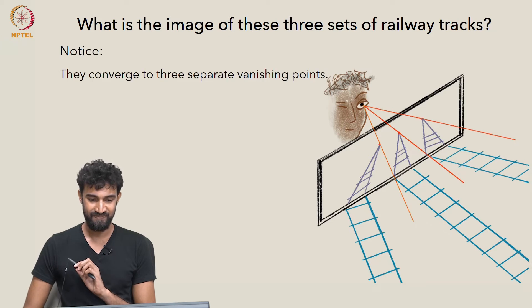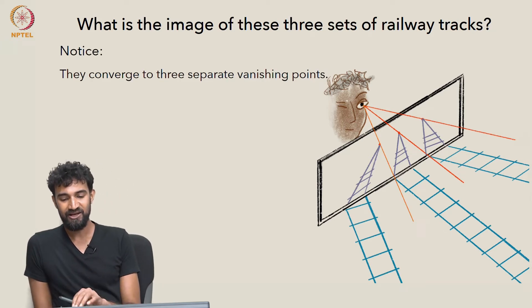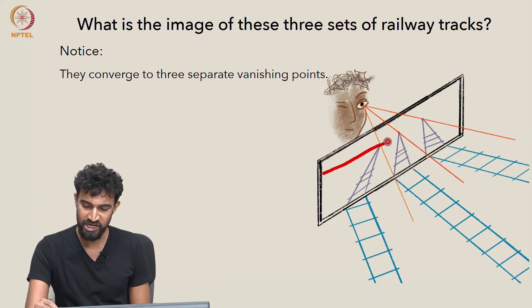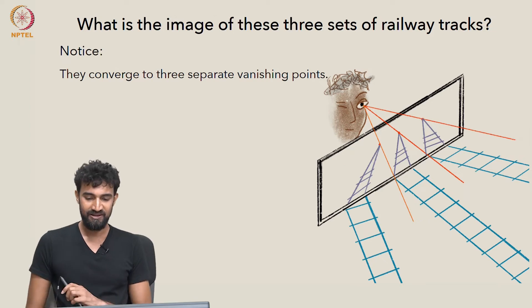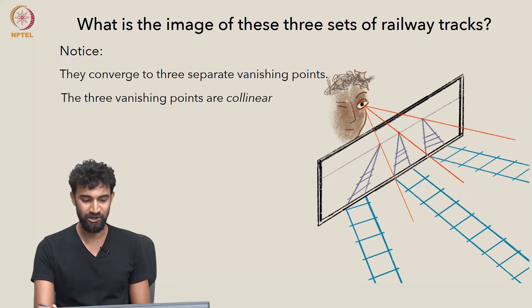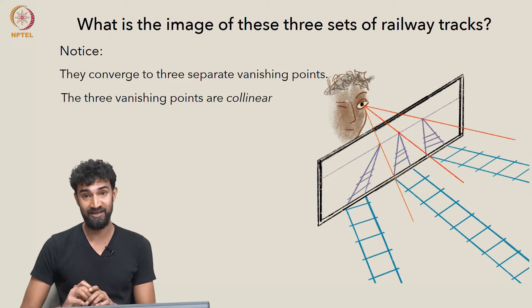But although they converge to separate vanishing points, you might notice that these vanishing points do share something. They do have something in common. And in particular, they're collinear. They all lie on the same line.